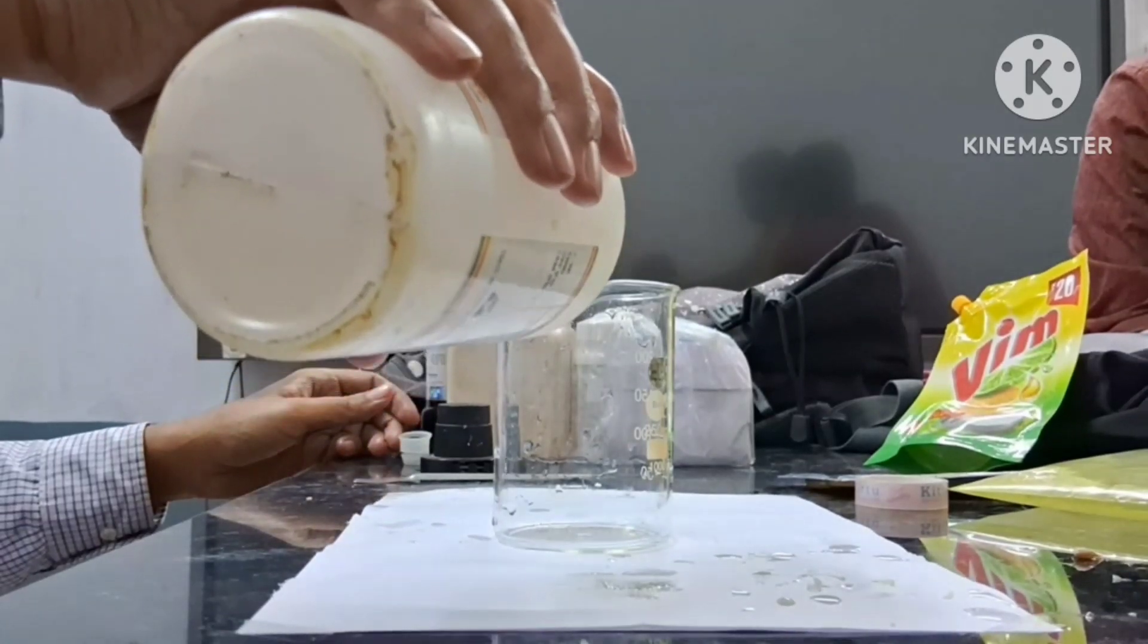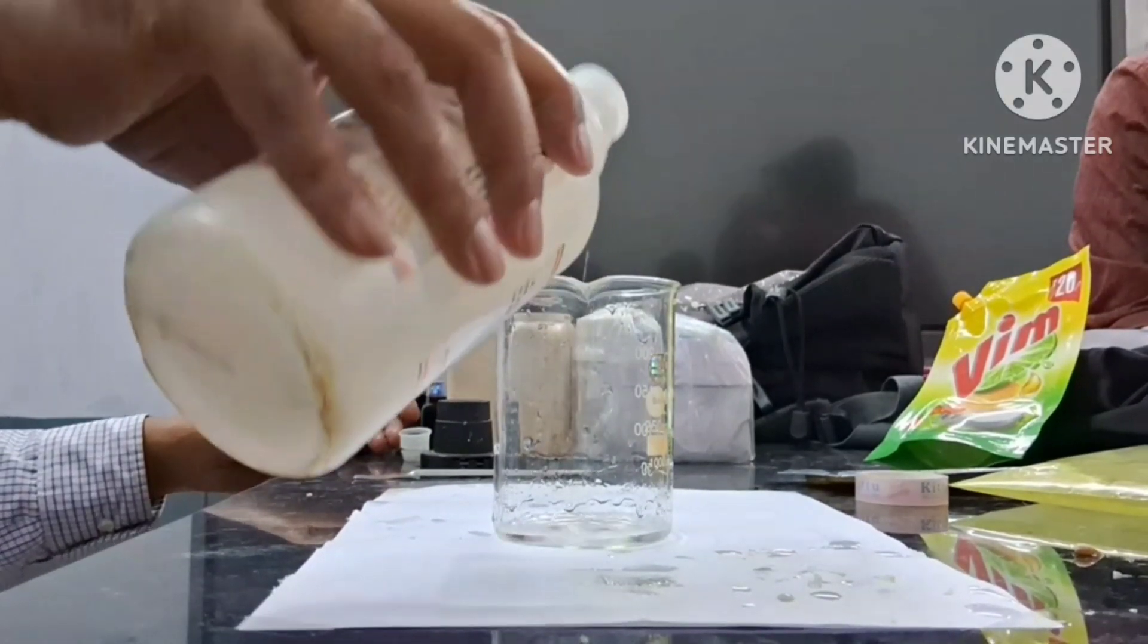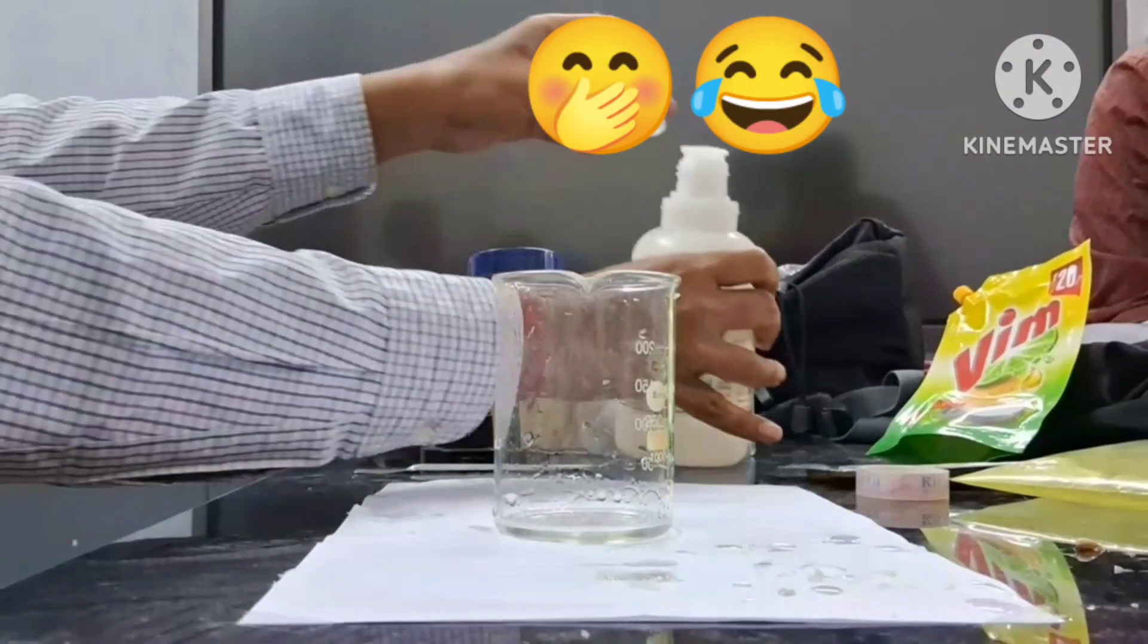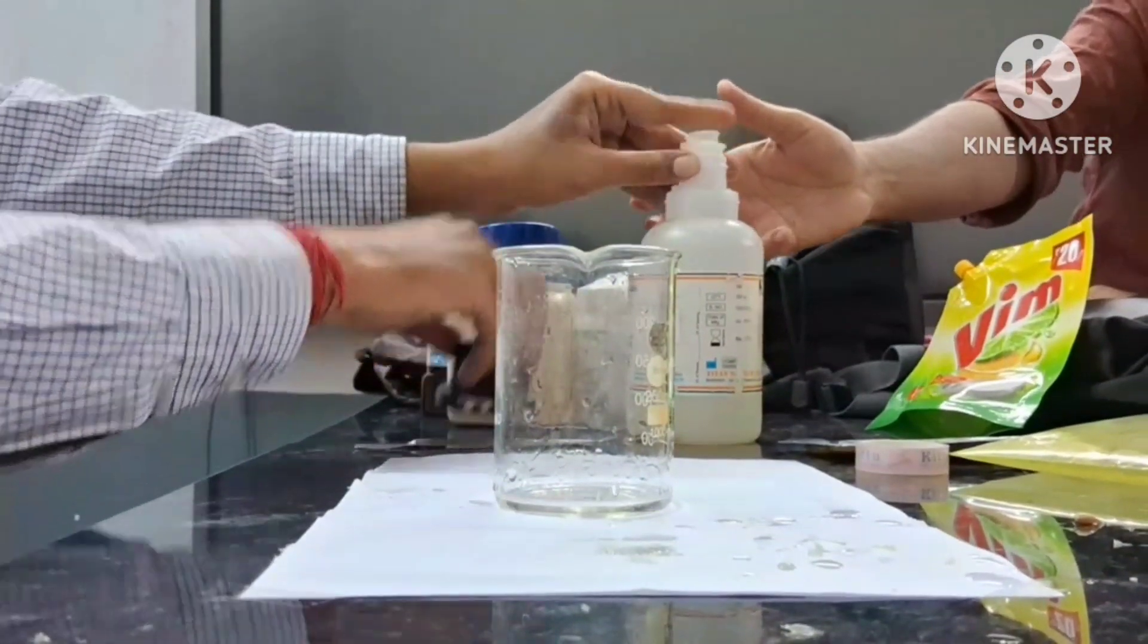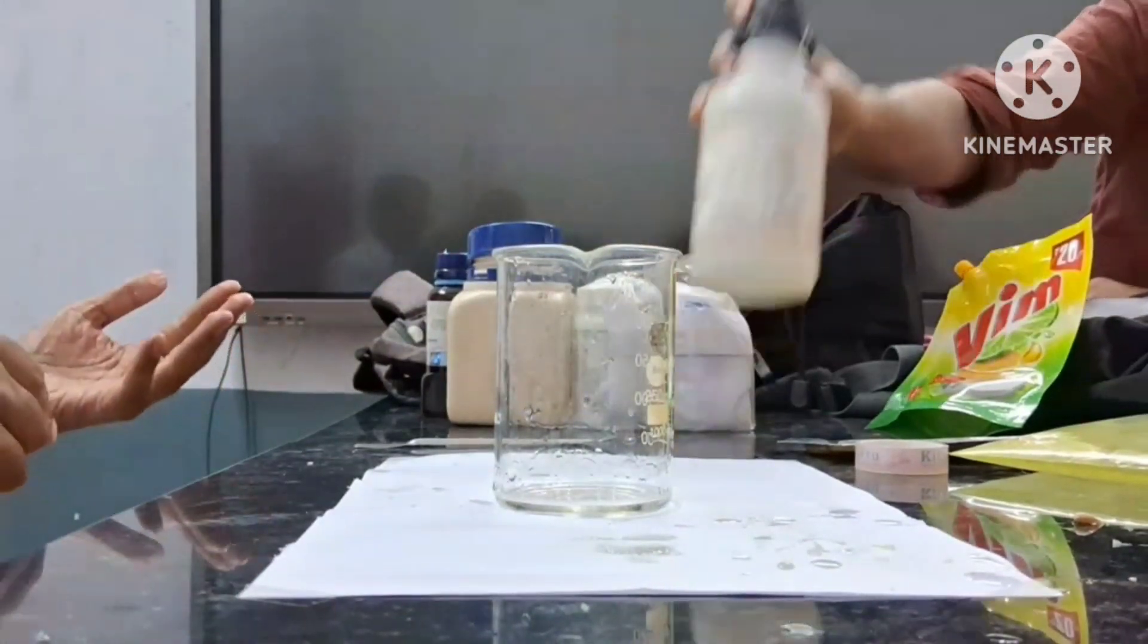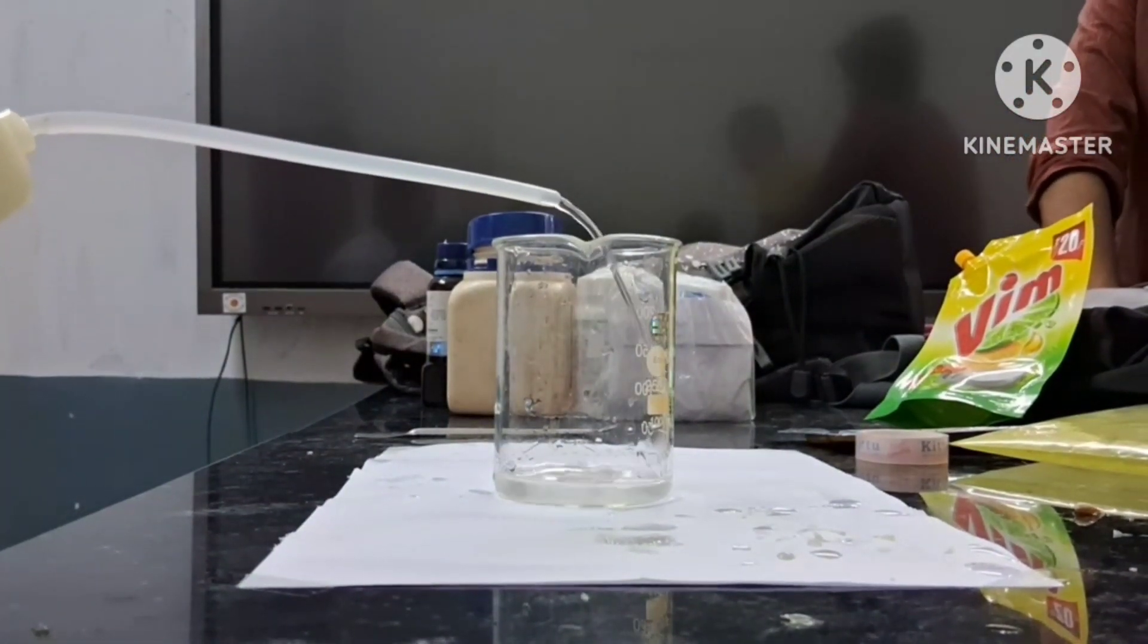In this video I will show you how to prepare toothpaste for baby elephant. Firstly, we will take 20 ml of glacial acetic acid in a beaker, then we will dilute it with a small amount of water.